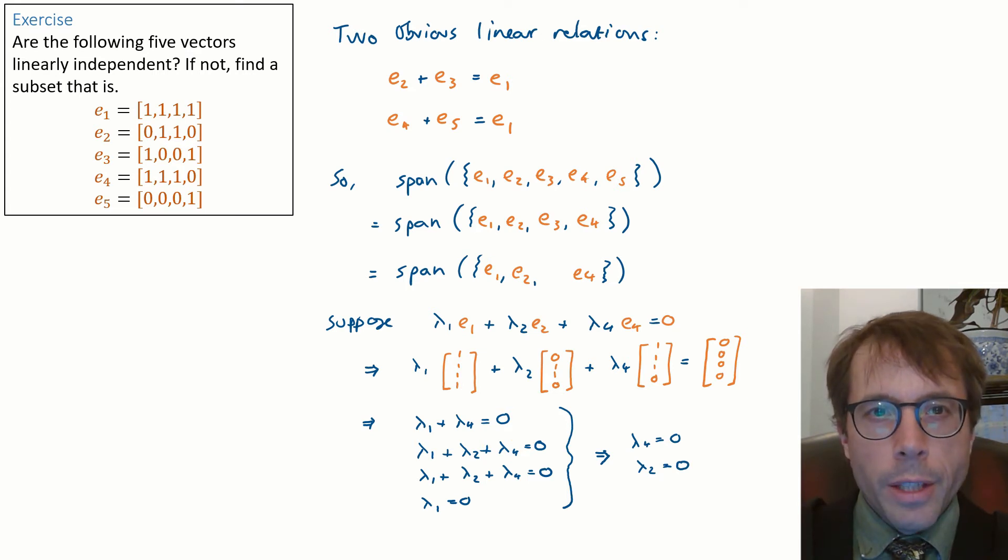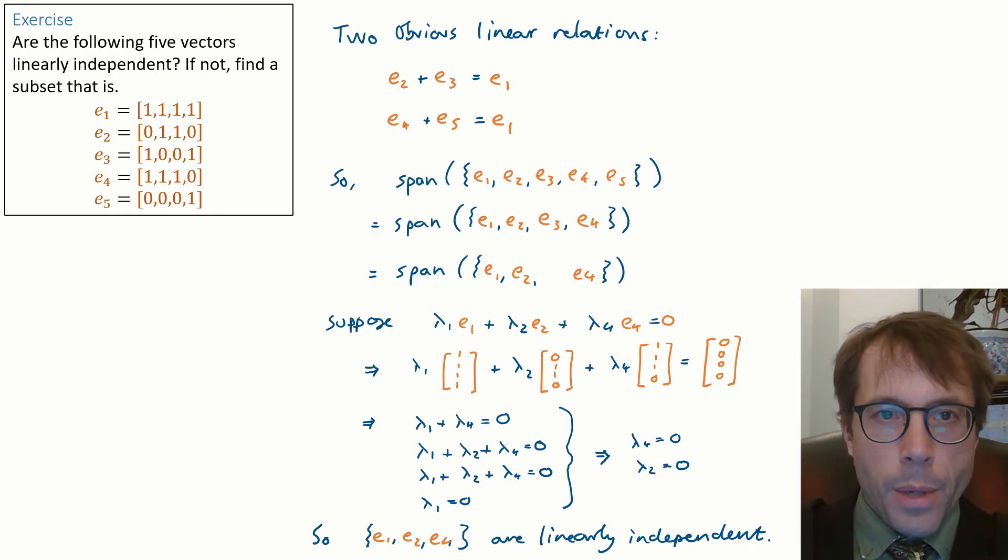So the only linear combination that adds up to zero is where all of the lambda coefficients are equal to zero. And so by the definition of linear independence, e1, e2, e4 is a linearly independent set of vectors.